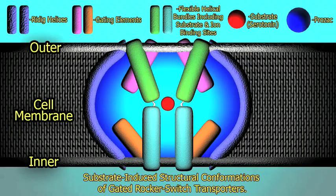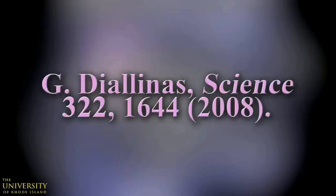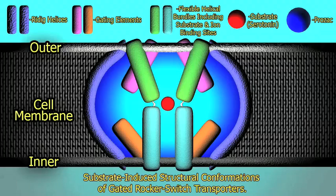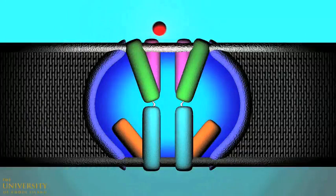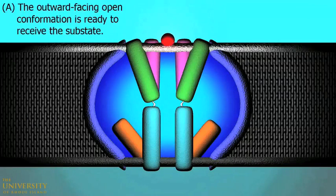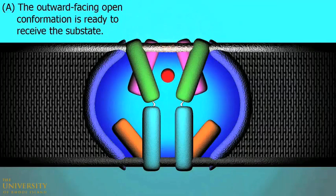Here is a detailed view of the membrane-bound serotonin transporter protein based on a 2008 article in Science. As you can see, this transport protein's reuptake mechanism is a substrate-induced structural confirmation of gated rocker switches. In stage A, the outward-facing open conformation is ready to receive the substrate.